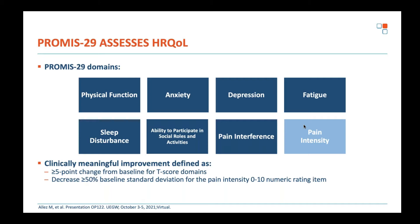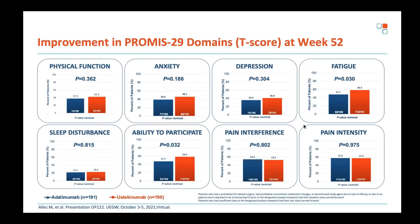Pain intensity is measured on a zero-to-10 rating, while the other domains use a T-score based on the average quality of life measures from a group of healthy people. There are validated measures of significant change in each of these scores. Looking at the proportion of patients with significant improvement in each domain at week 52, there was no major difference between the two drugs.